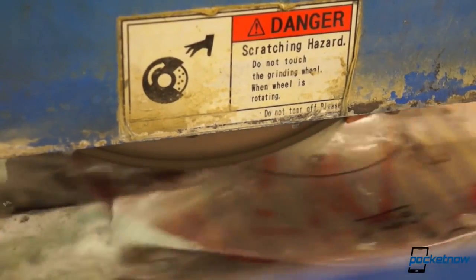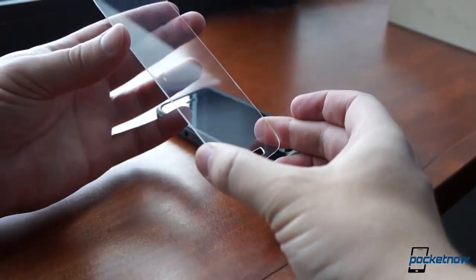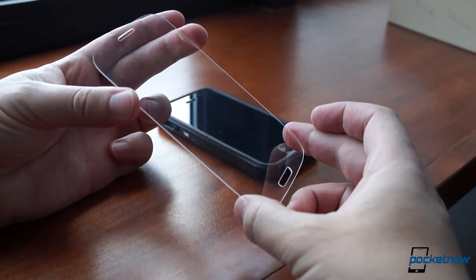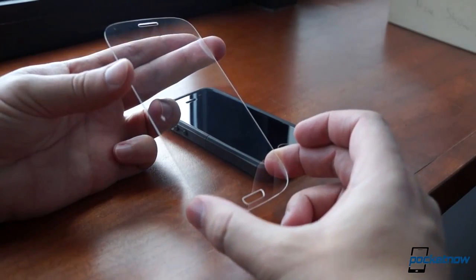A few hole punches for button and speaker penetrations, and voila! A thin, light screen protector harder than Gorilla Glass, harder even than any material except for diamonds—a practically unscratchable display coating.